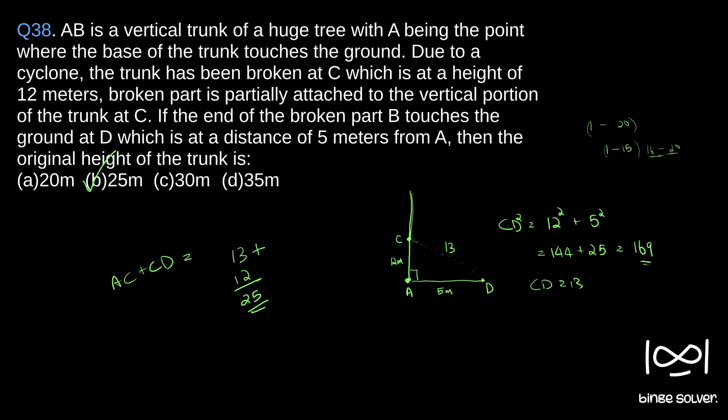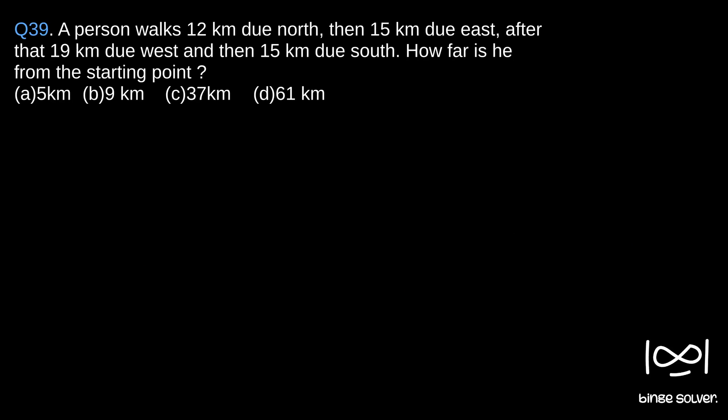Next question, question 39. A person walks 12 kilometers due north, then 15 kilometers due east. We will just draw it while reading. So a person walks 12 kilometers north, so let this be 12 kilometers. Now then 15 kilometers.